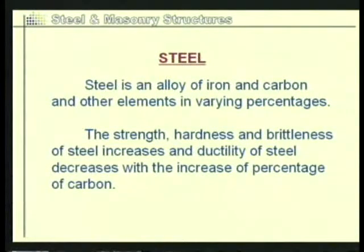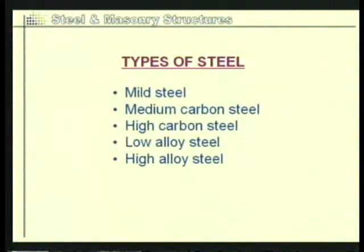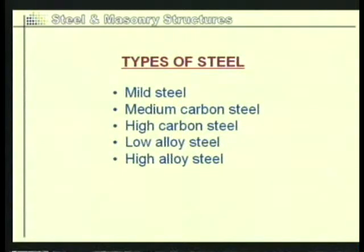As we vary the percentage of carbon, we have different types of steel. The types available are mild steel, low carbon steel, high carbon steel (also called high tensile steel), high alloy steel, and low alloy steel. Of these five types, the most important for structural purposes are mild steel and high tensile steel.